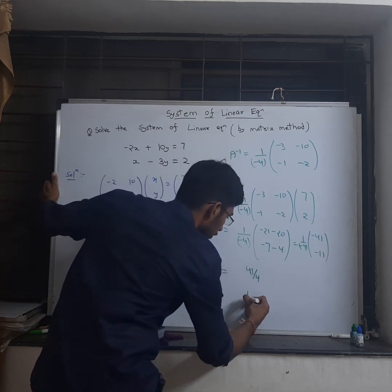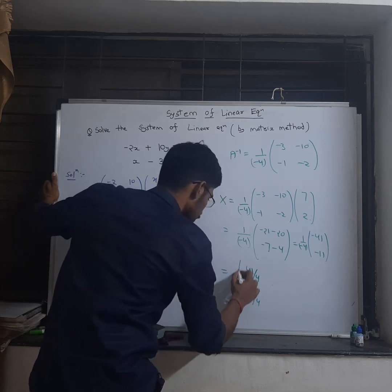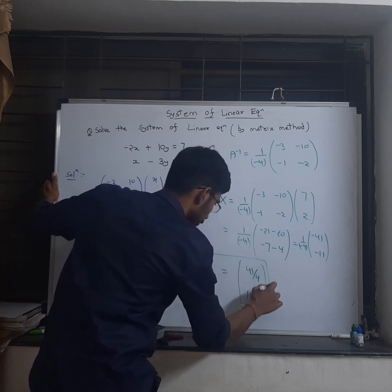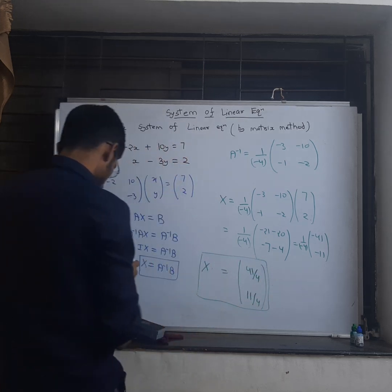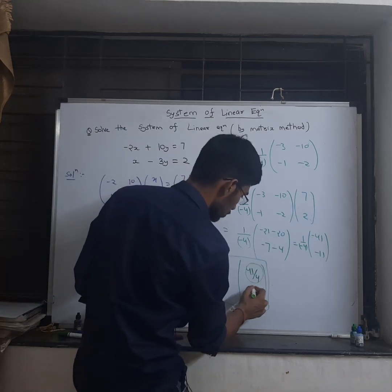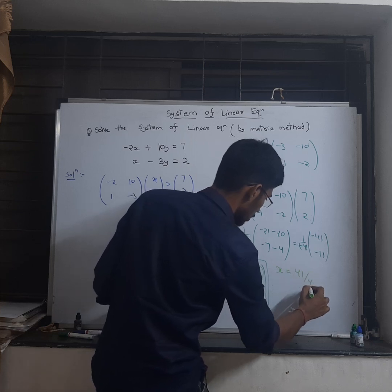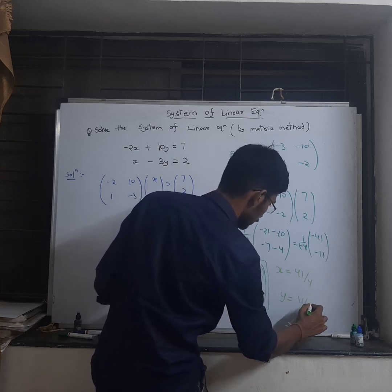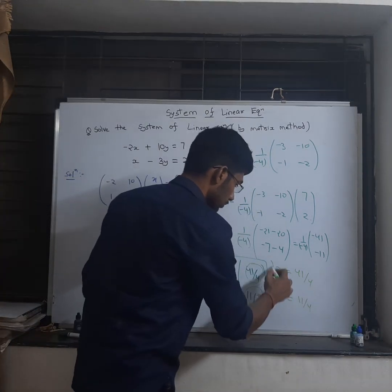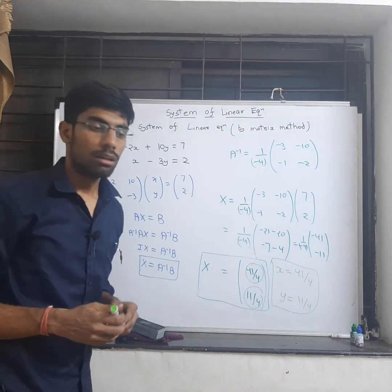This is my capital X, so this is actually x and this is y. So x equals 41 by 4 and y equals 11 by 4. This is the solution for this system of equations by matrix method. Okay, thanks.